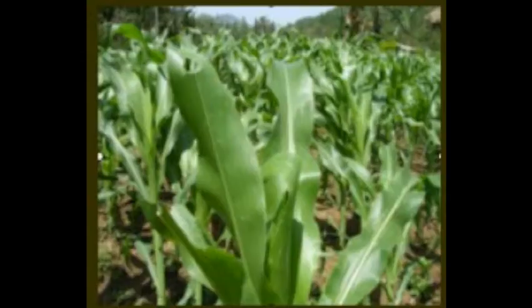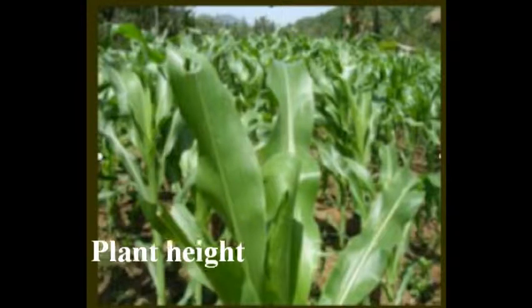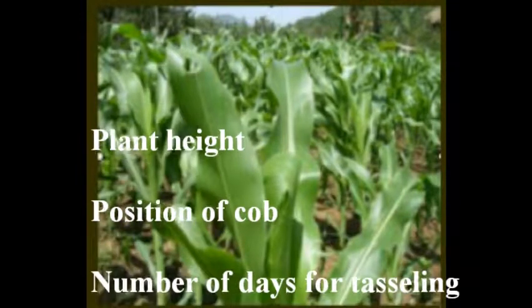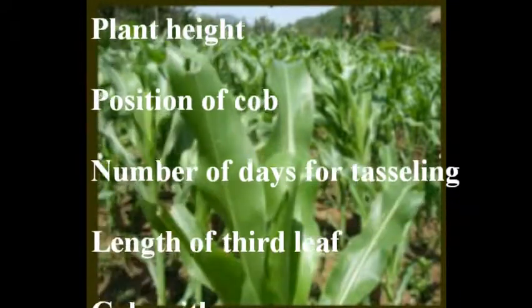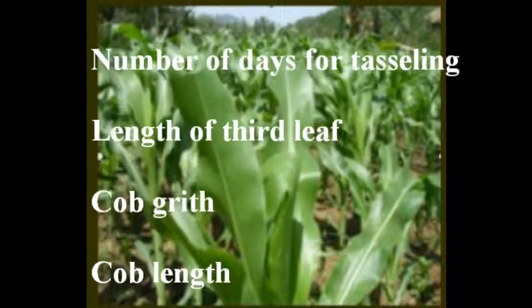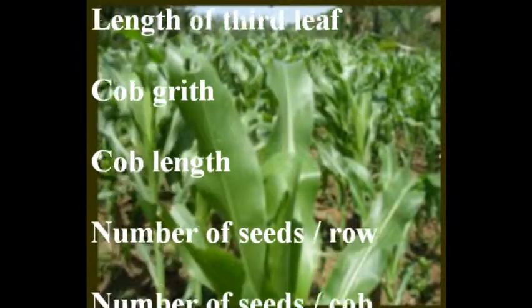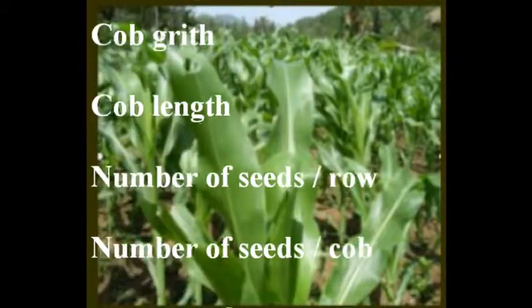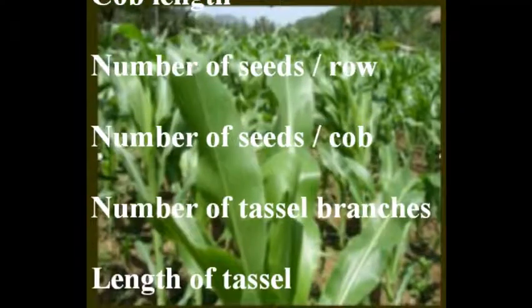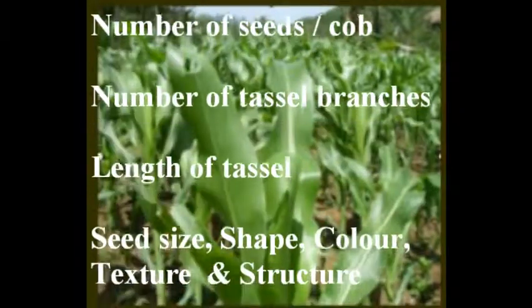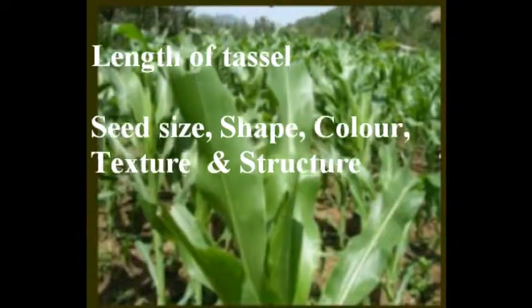Hence it is clearly important from many points of view that varieties are to be distinguished and identified properly. Cultivars can be identified using some morphological characters like plant height, position of cob, number of days for tasseling, length of ear leaf, cob growth, cob length, number of seeds per row, number of seeds per cob, number of tassel branches, length of tassel, seed size, shape, and color.